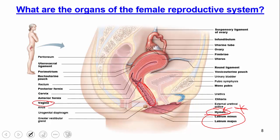Just anterior to the vagina is the opening to the urethra, where the woman urinates, and above that is the urinary bladder. Further anterior is the clitoris, which gives the female pleasure and is responsible for sexual arousal. Moving to the internal structures, the ovary is the primary sex organ that produces the egg. The outer portion of the ovary is called the cortex, and the inner portion is the medulla. The cortex is where the developing gamete or oocyte is found.